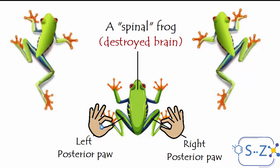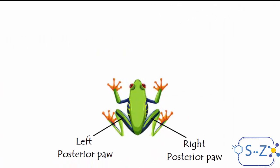Then they pinched the left posterior pole — again, it's the stimulus — and the frog flexed its left posterior pole. Then they did another series of experiments, also on spinal frogs.